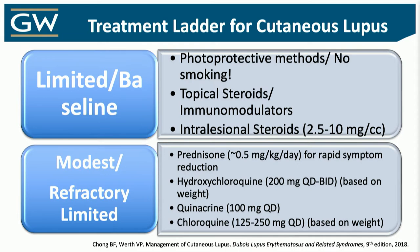For moderate to severe disease, depending on how bad they are when they come in, they're going to get a protracted taper of prednisone — usually 1 mg/kg, maybe 0.5 mg/kg — over about a month or two. At that moment, I'm initiating hydroxychloroquine. It is a great go-to, but it takes a long time to work — like four or five months. So if you're even thinking about it, put it in the water. Quinacrine is certainly another option, which can be combined with hydroxychloroquine.